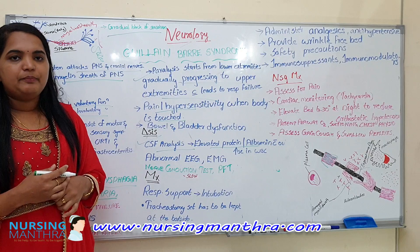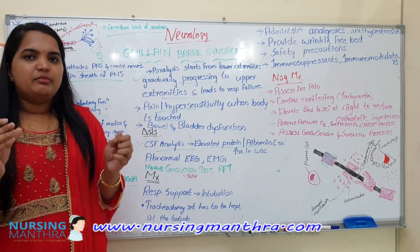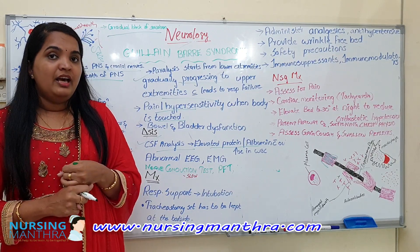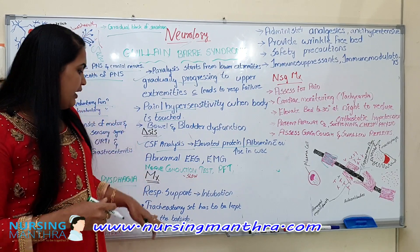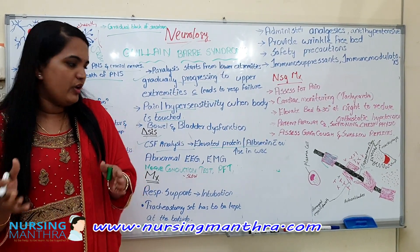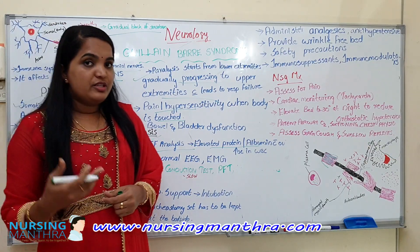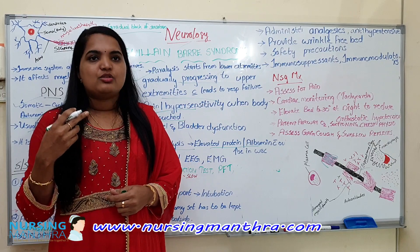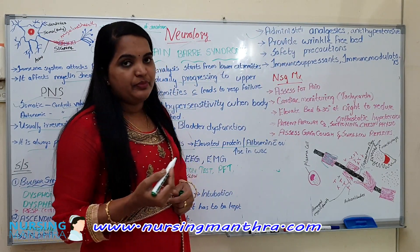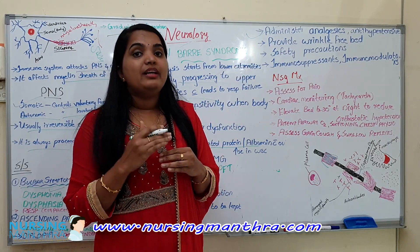Management mainly focuses on respiratory support, because it causes problems to respiration due to weakness of the diaphragm. Ventilator support and assistive devices for breathing are required. Intubation may be required in final stages, and a tracheostomy set must be kept at the bedside. Medications include IV immunoglobulin and analgesics, since the patient is more sensitive to pain. Antihypertensives are given if hypertension is present. Always provide a wrinkle-free bed.